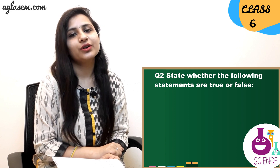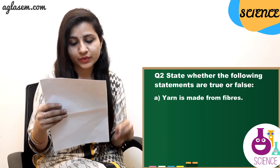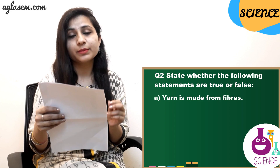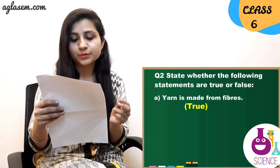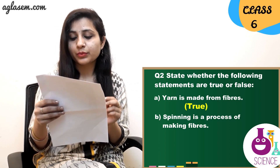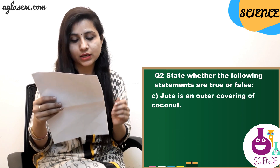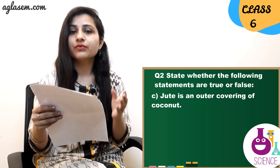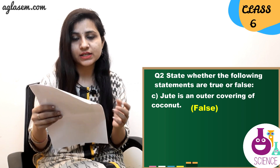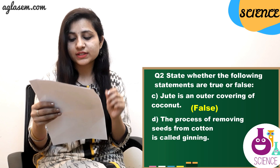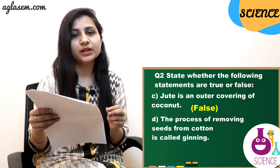Question 2: State whether the following statements are true or false. (a) Yarn is made from fiber — True. (b) Spinning is a process of making fibers — False. (c) Jute is an outer covering of coconut — False.